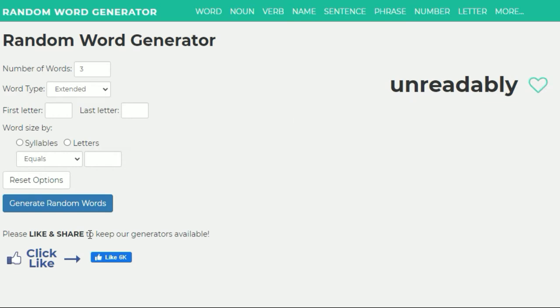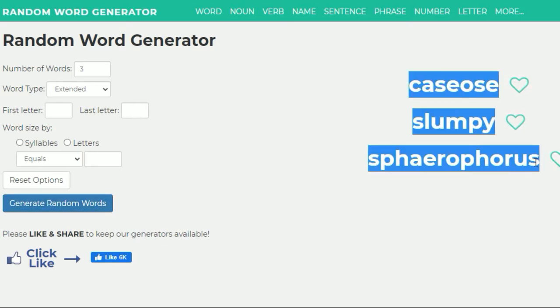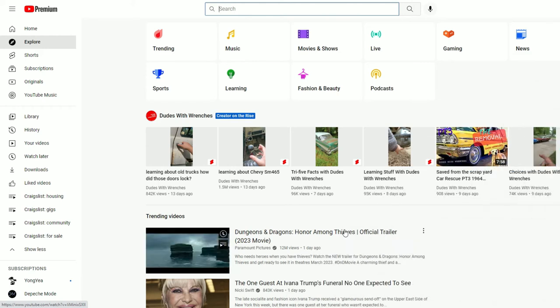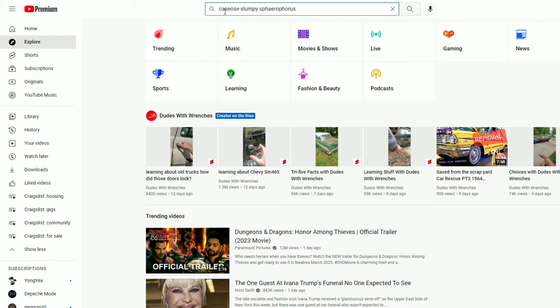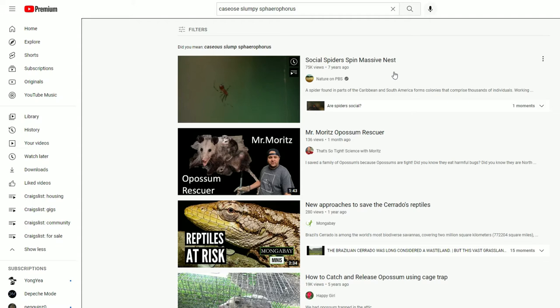At the end, I'll give it a rating. Let's do a countdown here. Three, two, one. What is this word? Casos, slumpy, sefero. I don't know what that means. Let's give it a shot and see what we got. Let's paste these words in the search box here. I have no clue what this would even generate.